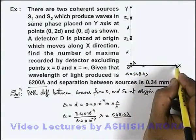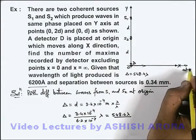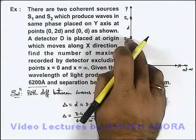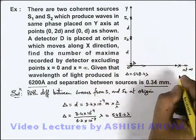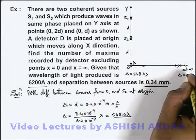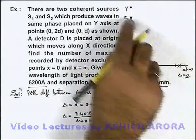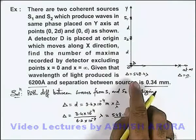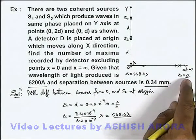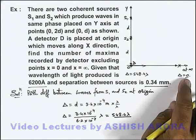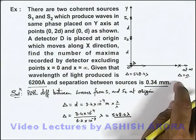And when detector will move to infinity, then we can say at infinity the two waves from S1 and S2, the path difference we can consider to be zero because the waves are travelling almost horizontally. So in this situation at infinity there'll be a maxima because path difference is zero, but we won't count it.